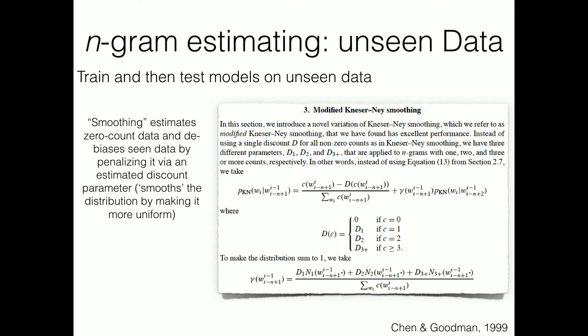Modeling n-grams gets really complicated when you talk about smoothing — training a model on one dataset and then trying to predict data from a different dataset using that n-gram model. As you do that, you run into entries that don't exist from your training to test set. There's been a wealth of literature over the past 20 years, since n-grams became popular language modeling tools in the 80s up to about 1999, when stronger statistical models for estimating unseen data — called smoothing — came about.